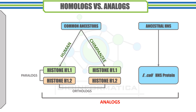Here we have depicted the basic difference between homologues and analogues. Humans and chimpanzees share common ancestors and both have histone H1.1 and histone H1.2 in their bodies — this shows divergent evolution and the homologous nature of these genes. However, E. coli has different ancestors than humans and chimpanzees, yet there is similarity between the HNS protein of E. coli and histone 1 of humans and chimpanzees, which shows the analogous nature of those genes.